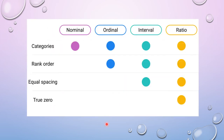In summary, under the nominal level we can only have categories. Under ordinal we have categories plus rank order. Under interval we have categories, rank order, and equal spacing. Under ratio we have all of those plus a true zero — that is the key feature of ratio. Ratio level is the highest in the hierarchy, followed by interval, then ordinal, then nominal.